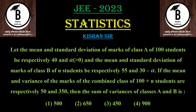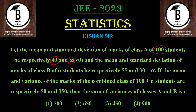Let the mean and standard deviation of marks of class A of 100 students be 40 and alpha respectively. The mean and standard deviation of marks of class B of n students (where n is unknown) are given as 55 and 30 minus alpha respectively.